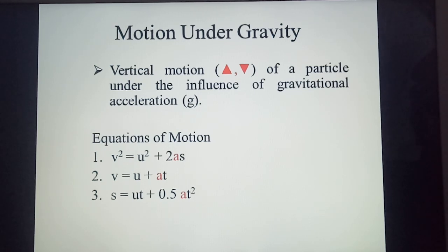Now to solve the numericals of motion under gravity, we are going to use the equations of motion. We are all familiar with these three equations of motion: v² = u² + 2as, v = u + at, and s = ut + 0.5at².